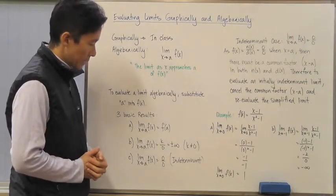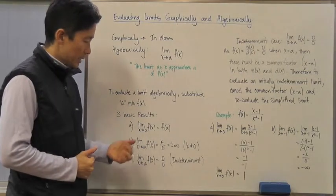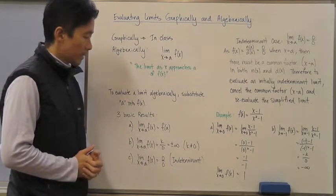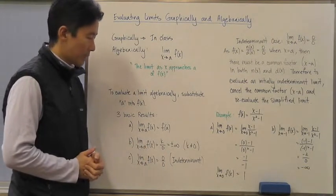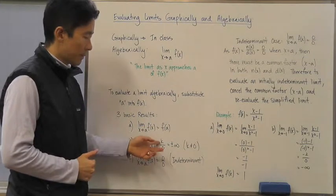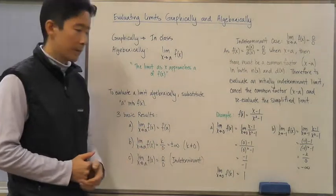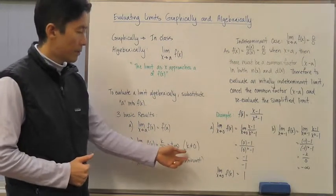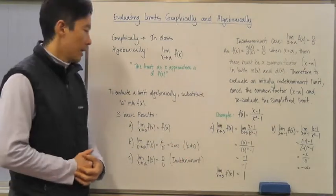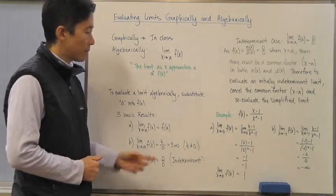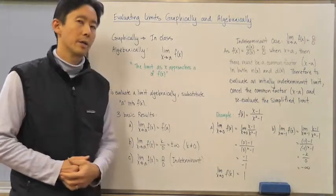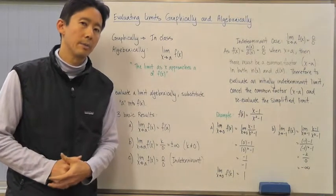The second possible result is when you substitute a into f of x and instead of a real number you get some number k over zero, where k is not equal to zero. What this gives you is plus or minus infinity, and we'll talk more about that later in class.